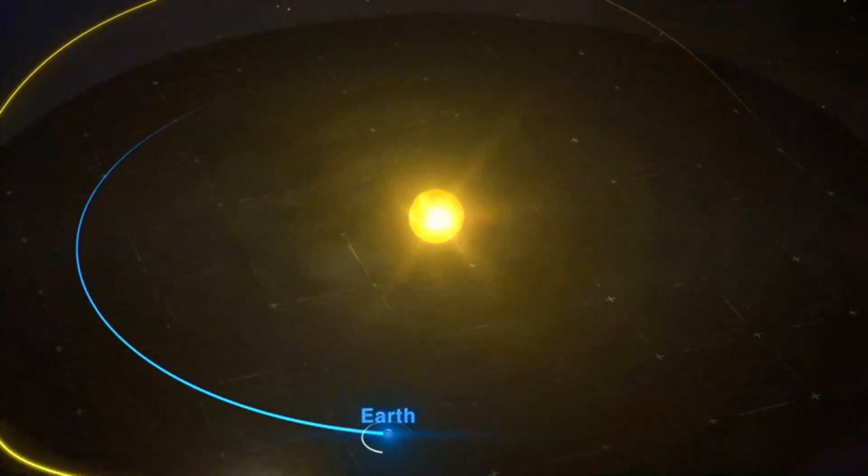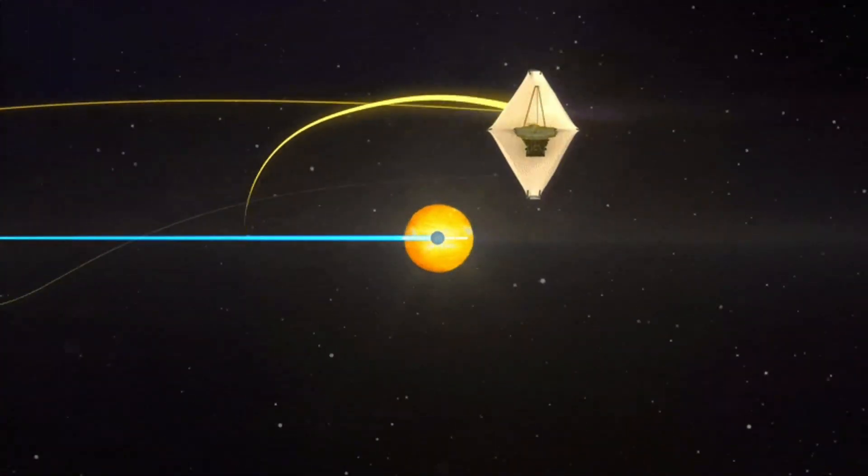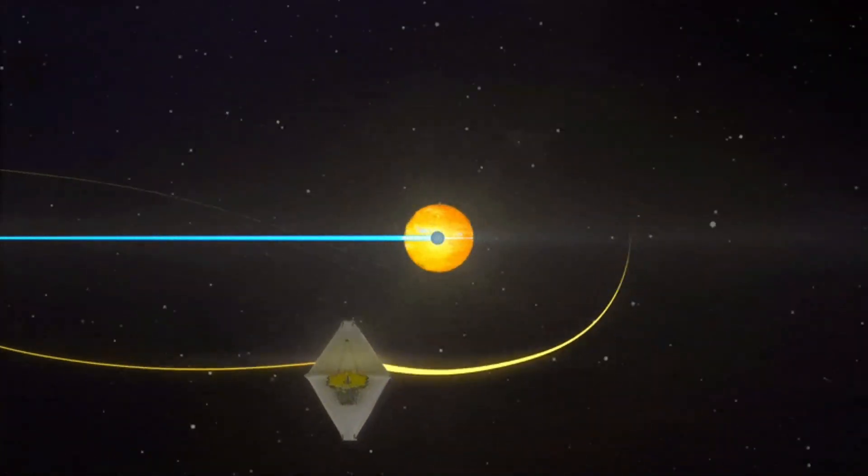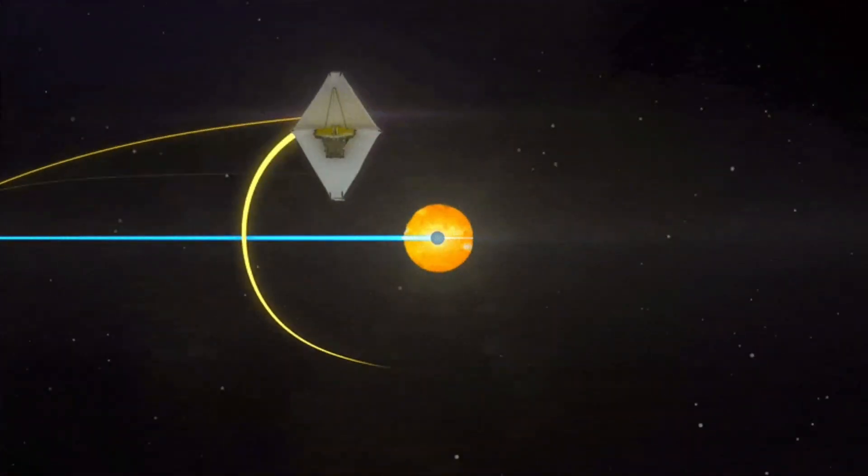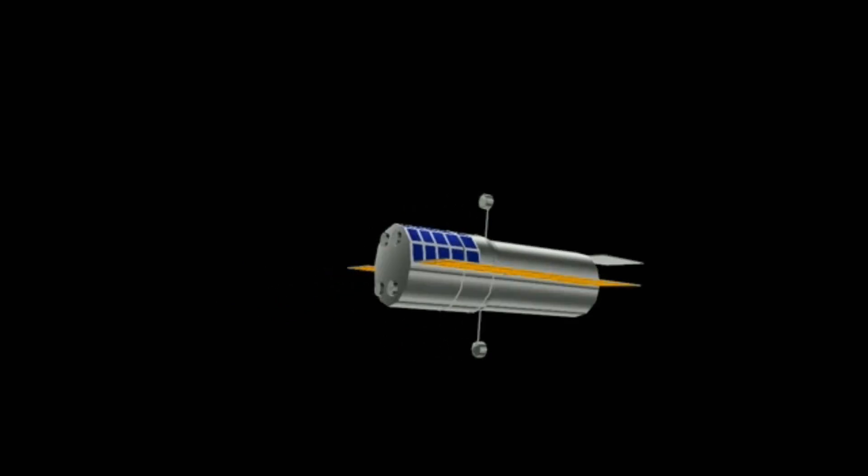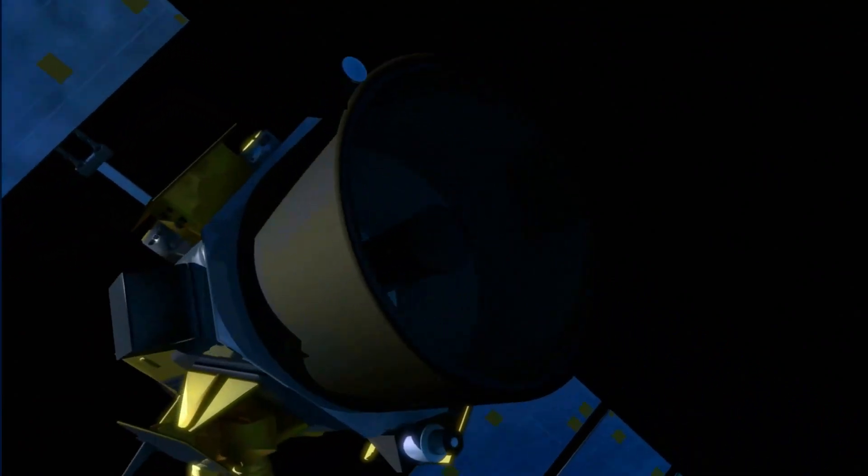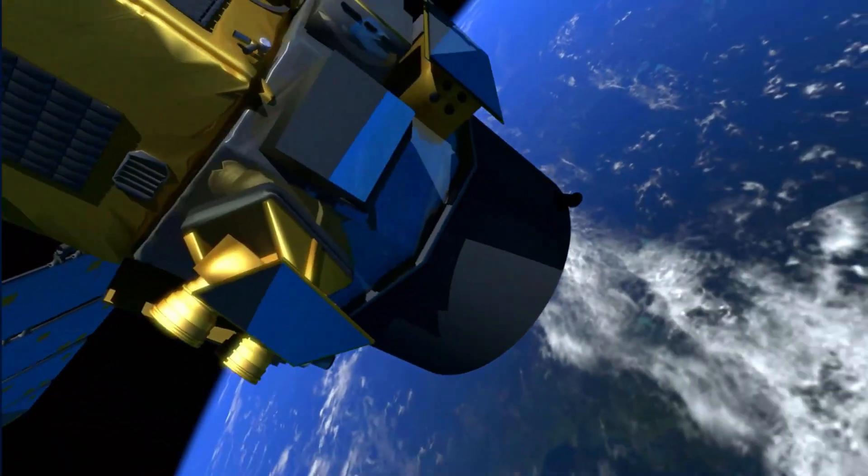The JWST's orbit also keeps it out of the shadows of both the Earth and the Moon, giving it an unobstructed view of the universe for the duration of its journey. Meanwhile, every 90 minutes the Hubble Space Telescope passes through the shadow of the Earth. Webb and other telescopes will use multi-wavelength studies of Sagittarius A* to aid scientists' understanding.